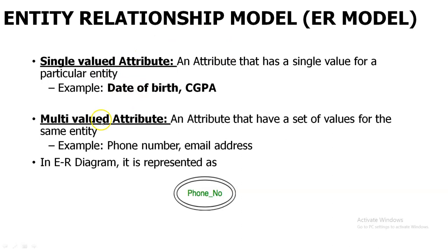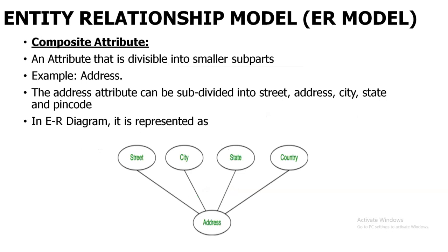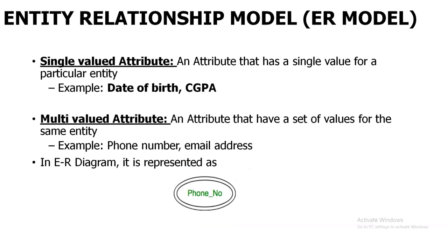The next one is multi-valued attribute. Multi-valued means the attribute will be having multiple values. For example, phone number — one student can have two or more phone numbers, such as his own or his parent's phone number. Similarly, a student can have multiple email IDs — personal mail ID as well as institutional mail ID. This comes under multi-valued attribute. The difference is: in composite attribute, it is one single value divided into multiple parts; in multi-valued attribute, the attribute itself holds multiple values.